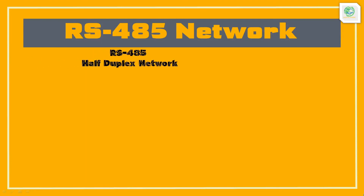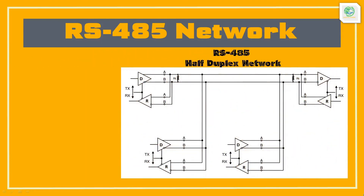This is an example of how a RS-485 network looks. The circuit shown is of a half-duplex RS-485 network. Every terminal has a driver and a receiver — the driver sends data (0s and 1s) on the network and the receiver receives the sent data. Terminating resistors are also installed on the two farthest terminals.